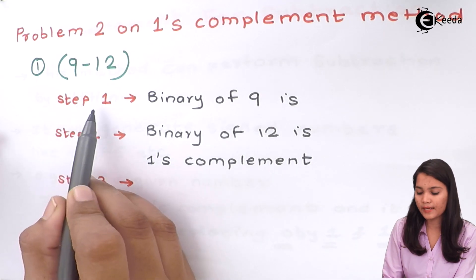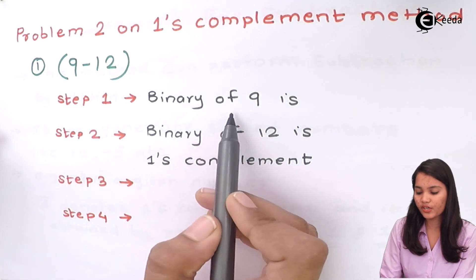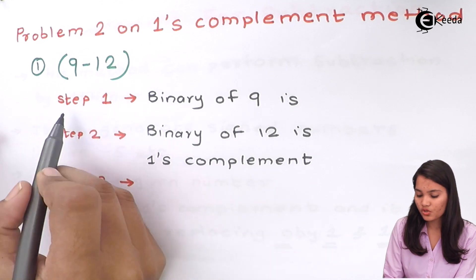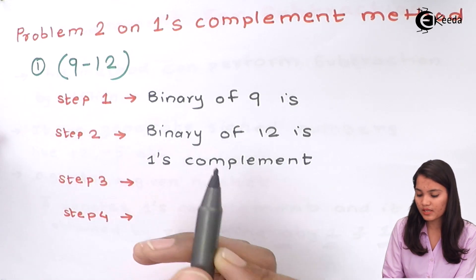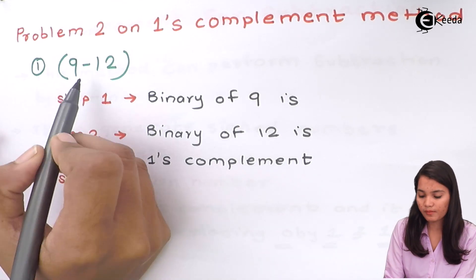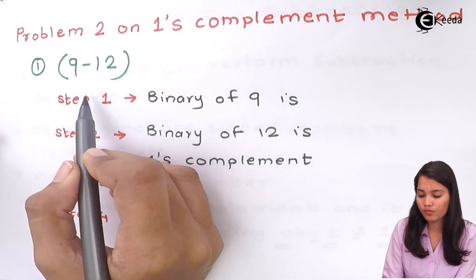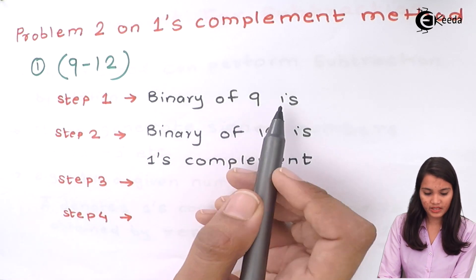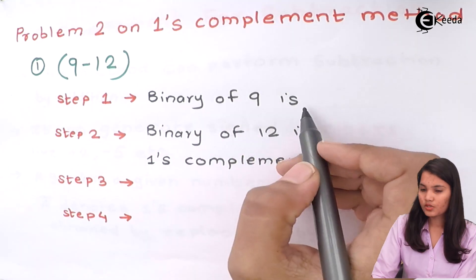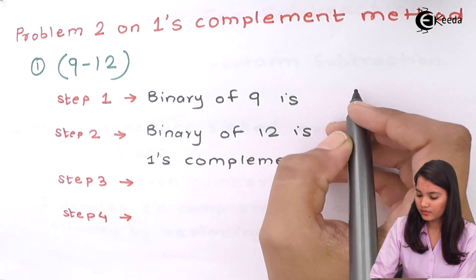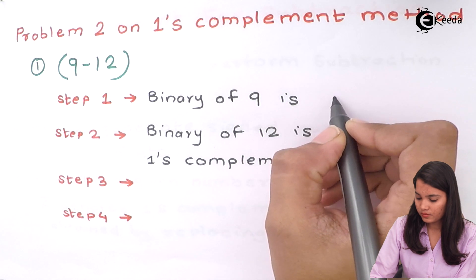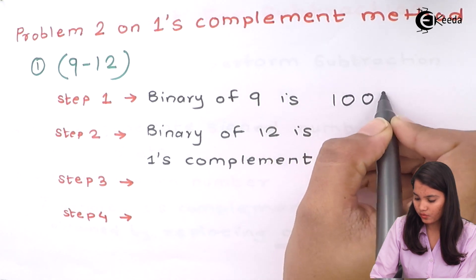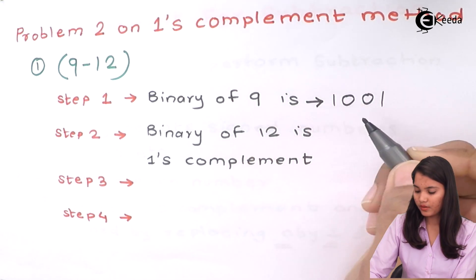The first step is to find out the binary of the first number. Here the first number is 9. So what will be the binary of the first number? The binary of 9 is 1 0 0 1.